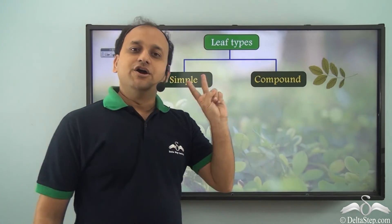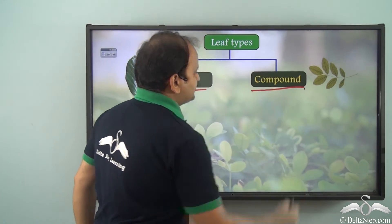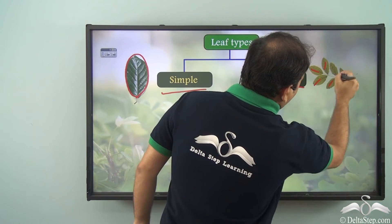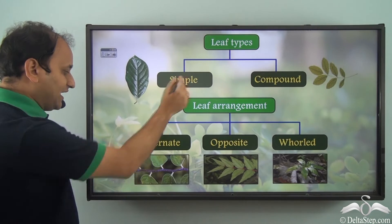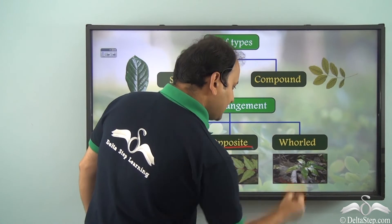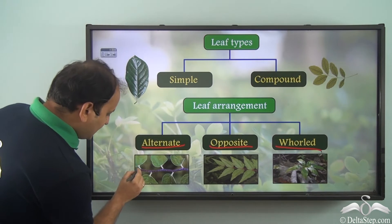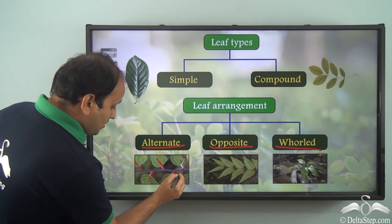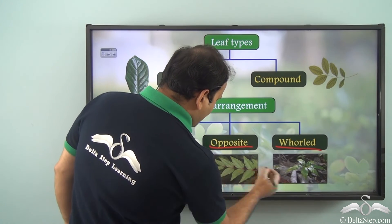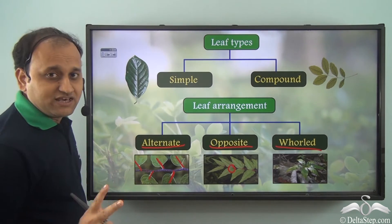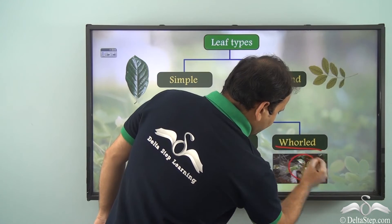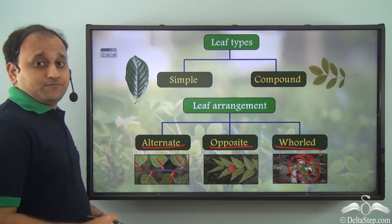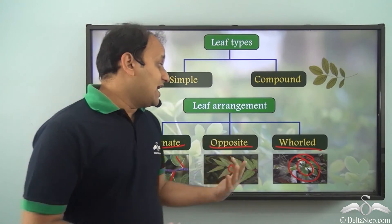When we talk about leaf types, we have two major categories: simple and compound. In simple, we have one single blade, while in compound, this blade is divided into small leaflets. If we talk about leaf arrangement, we have alternate, opposite, and whorled leaf arrangement. In alternate, leaves come out in alternate directions from each node with one leaf per node. In opposite, we have two leaves from every node in opposite directions. In whorled, we have three or more leaves from one node forming a circular pattern. This is how we categorize leaves into different types and different arrangements.